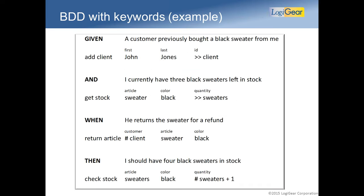What you can also do — which we like to do — is combine those techniques. Use GWT for the natural language, but implement it with actions. The actions allow you a bit more flexibility: keep the name of the client, get the stock, return the article, look how many sweaters you have. You can detail out the actual flow of a scenario and focus the rest of your attention just on those actions to make a smooth test.